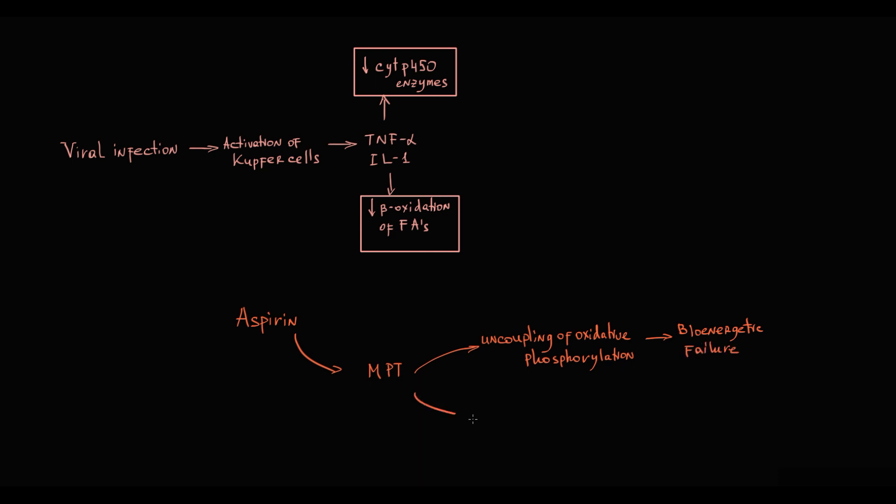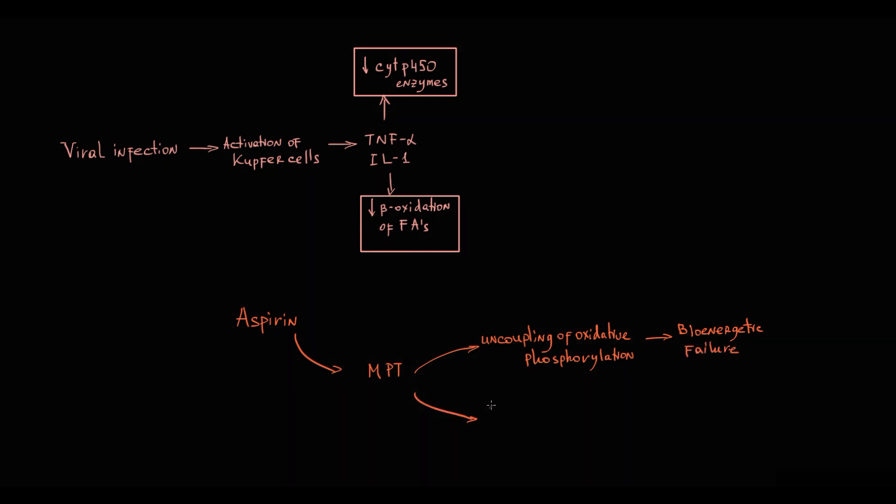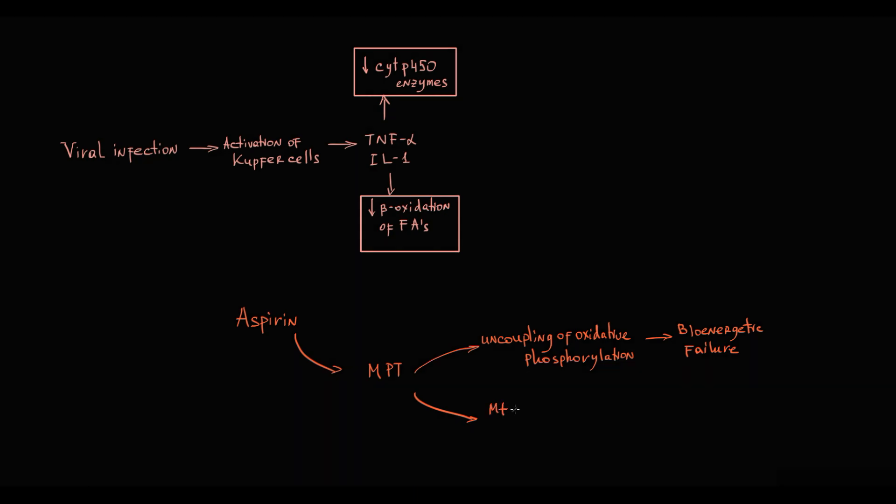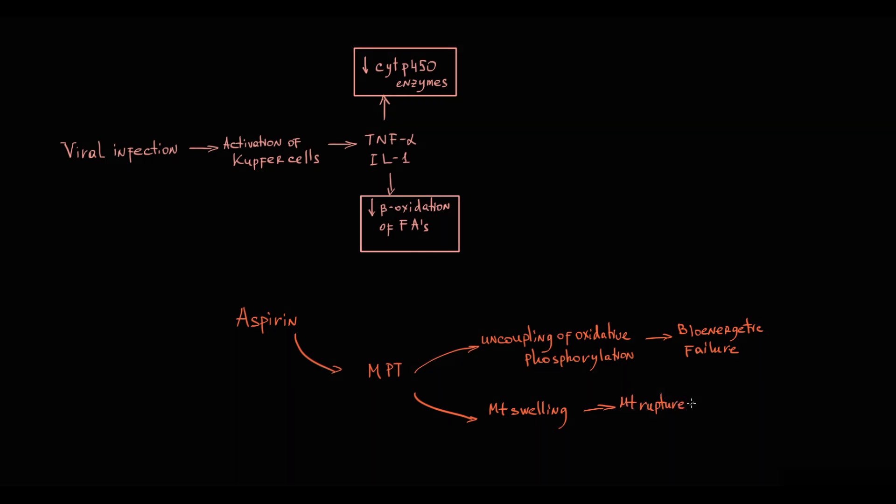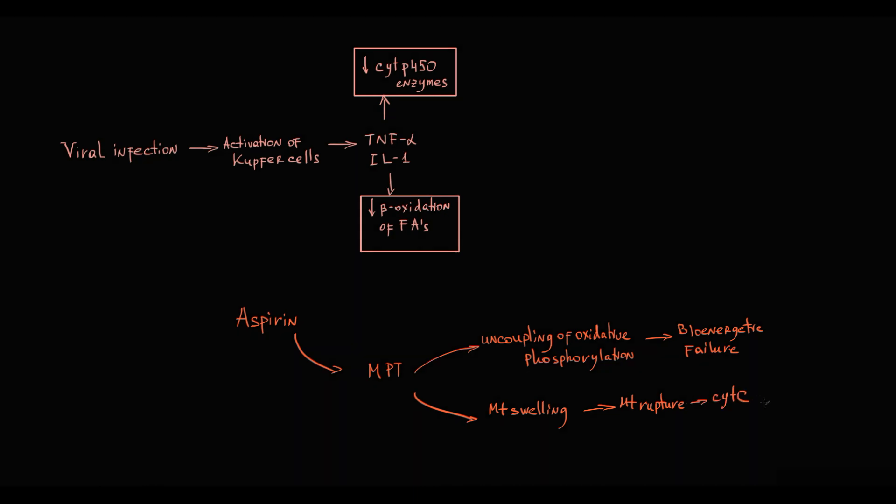Because mitochondrial matrix has higher protein concentration than cytosol, once membrane becomes permeable, fluid moves by osmotic gradient from cytosol to mitochondrial matrix. This causes mitochondrial swelling that results in rupture of both mitochondrial membranes. The most dangerous substance released is cytochrome c that induces intrinsic apoptotic pathway.